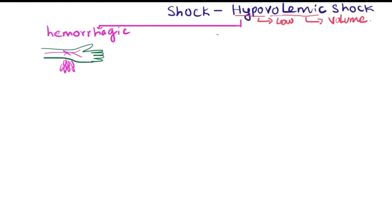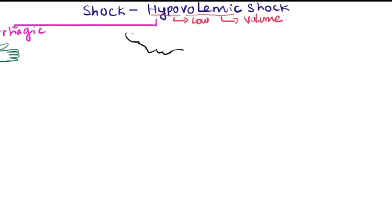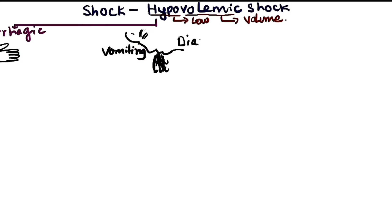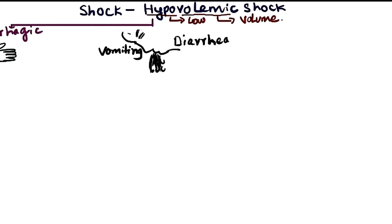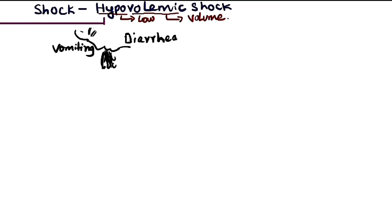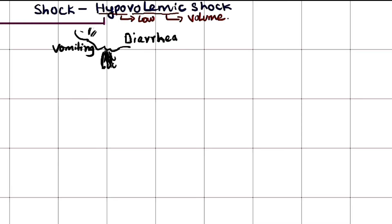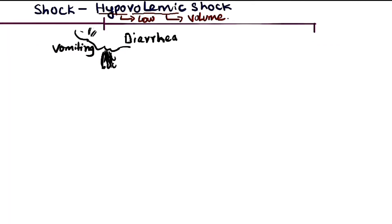Hemorrhage is the most common cause of hypovolemic shock. The second most common cause is vomiting or diarrhea, in which the patient loses a lot of ECF volume that triggers hypovolemic shock in extreme cases. Lastly, loss of excessive fluid in terms of urine in long-standing untreated diabetic patients — particularly diabetic insipidus.